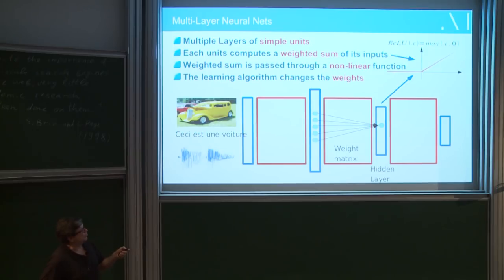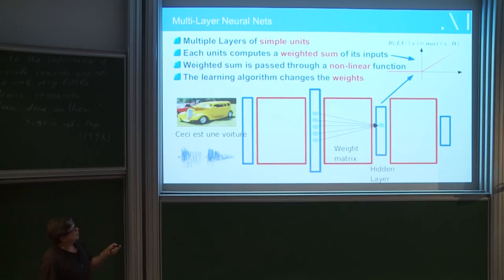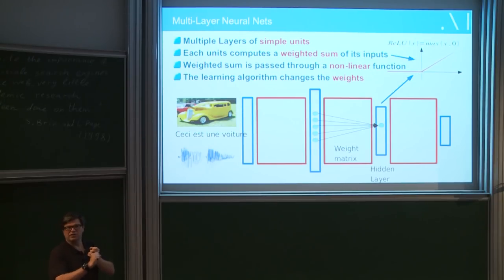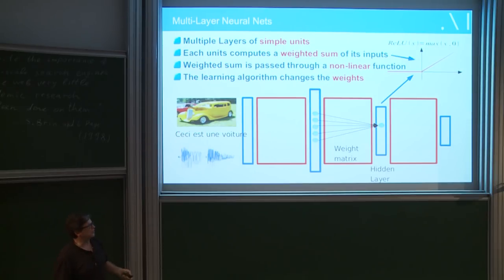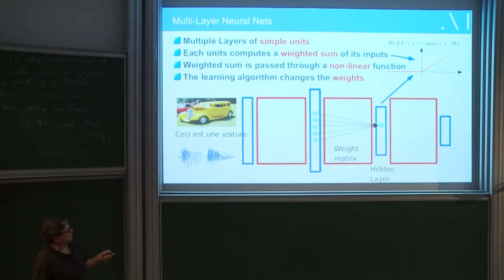You can think of those as performing an elementary classification. If the weighted sum — the dot product of one row of the matrix by the vector — is larger than zero, the output is the identity function; if smaller than zero, it's zero. That's kind of an elementary switch that determines whether something belongs to a category or not. Then you stack another layer of linear, non-linear, linear, non-linear — you can stack many layers.